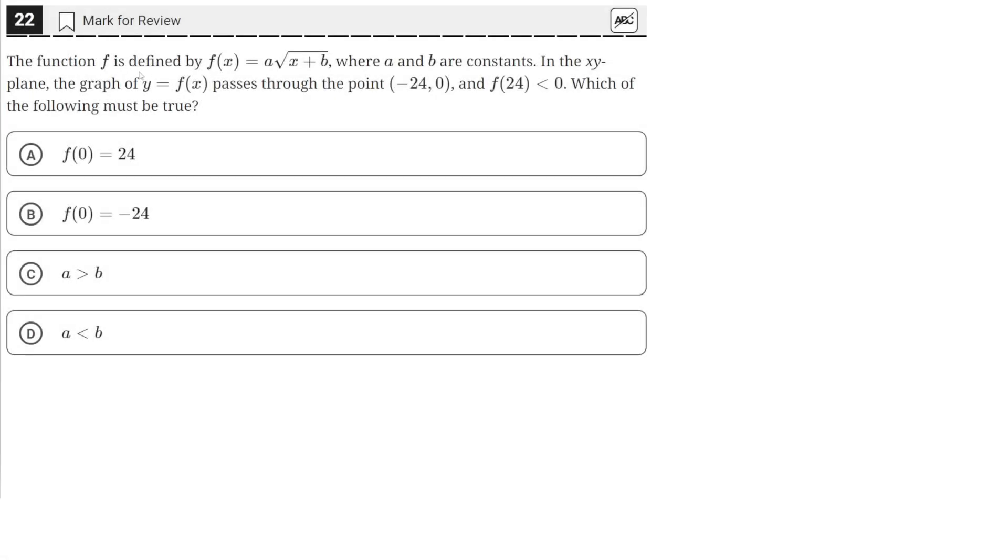The function f is defined by f(x) = a√(x+b), where a and b are constants. In the xy-plane, the graph of y = f(x) passes through the point (-24, 0), and f(24) < 0. Which of the following must be true?